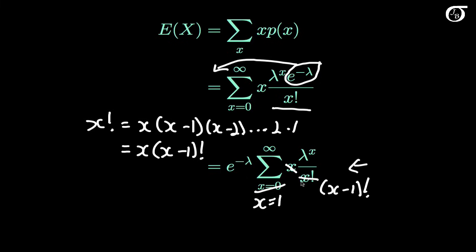We're left with x minus 1 factorial in the denominator. Since we have x minus 1 factorial in the denominator, it will be easier to also have lambda raised to the x minus 1 in the numerator. So I'm going to take one single lambda out front, leaving lambda raised to the x minus 1. Let's clean this up.